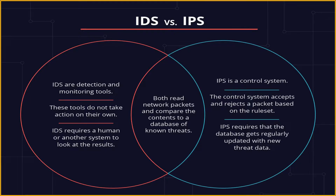Although both IDS and IPS can read network packets and compare the content to a database of known threats, the main difference between IPS and IDS is the action they take when a potential incident is detected. Intrusion detection systems are detection and monitoring tools, whereas intrusion prevention systems are control systems.